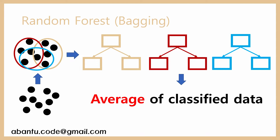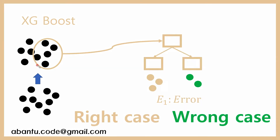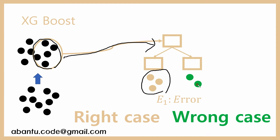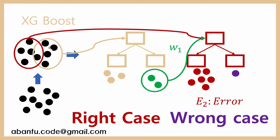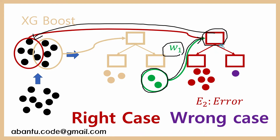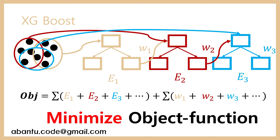Random Forest is part of the bagging algorithm. In XGBoost, we first make a sample of the data and build a decision tree, getting right cases and wrong cases — this gives us an error. Then we make another sample that includes the previous wrong cases with added weight, and we do another decision tree. We repeat this process and collect the error values and weight values.